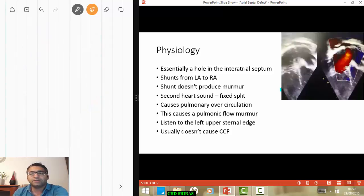So that will lead to a fixed splitting rather than a variable splitting. The best place to listen for murmur in atrial septal defect is obviously the pulmonic area, which is the left upper sternal edge. And atrial septal defect usually doesn't cause cardiac failure like a large ventricular septal defect. The main reasons for closing these defects are something else.